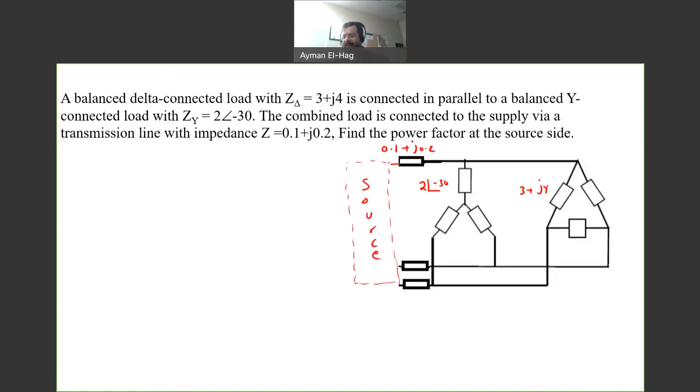That question looks a bit different than we used to do, because we know that the power factor is basically cosine of theta_v minus theta_i. But here we don't have a voltage, we don't have a current. So how can we find the power factor? The answer is very simple, because Z is the voltage with its angle divided by the current with its angle. So the angle of the load is basically the angle of the power factor. In other words, we want to find the equivalent impedance of this configuration, and the angle of this impedance will be the angle of the power factor.